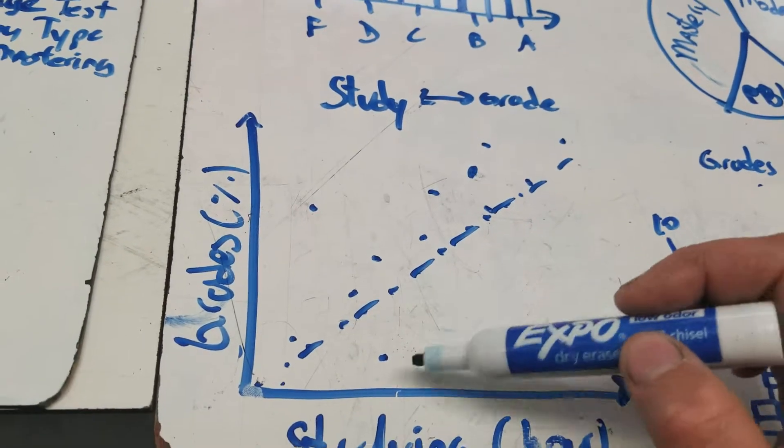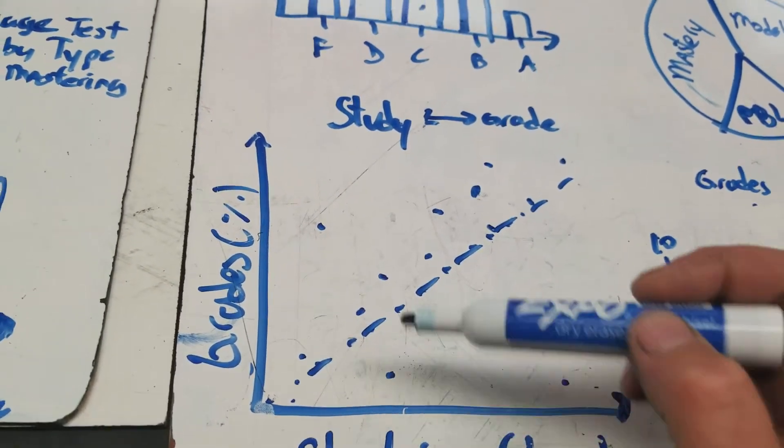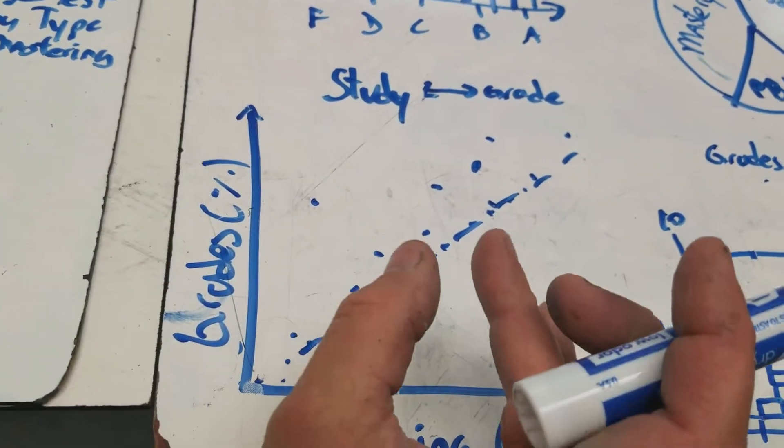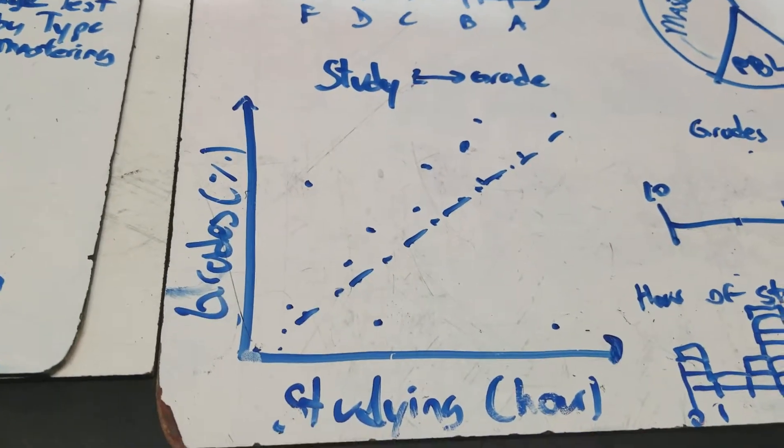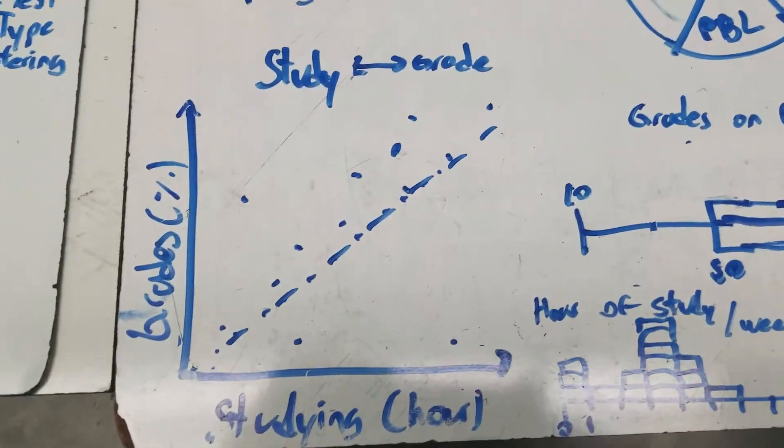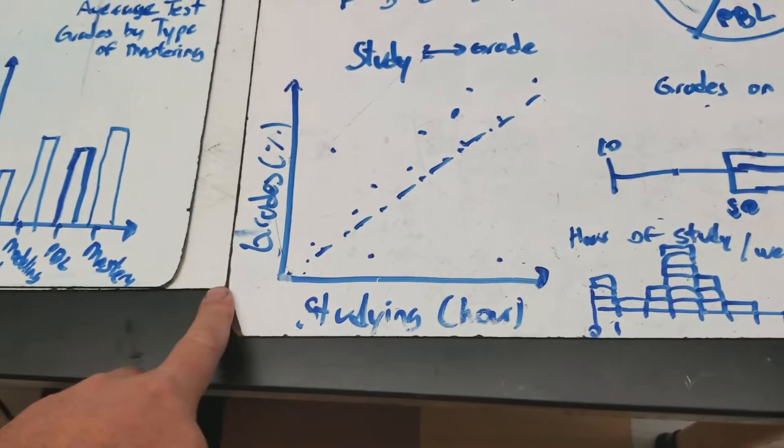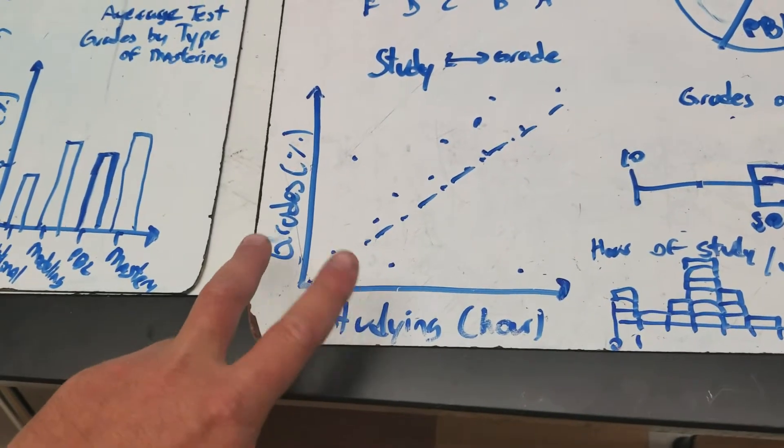Now, correlation is a calculation that determines how closely, on average, these kind of numbers are to the line. And the stronger, the closer the numbers are to the line, the stronger the correlation. And that's also what we use in science, especially in situations where you can't do an experiment. So I don't really know that studying does cause the grades. I just know that they're related to each other.